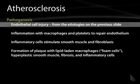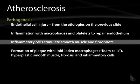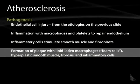The pathogenesis involves endothelial cell injury secondary to the etiologies mentioned previously. Inflammation with macrophages and platelets to repair the endothelium begins after injury, and the inflammatory cells stimulate smooth muscle and fibroblasts to act in these areas of injury, leading to formation of plaque with lipid-laden macrophages — or what we call foam cells — hyperplastic smooth muscle, fibrosis, and inflammatory cells.